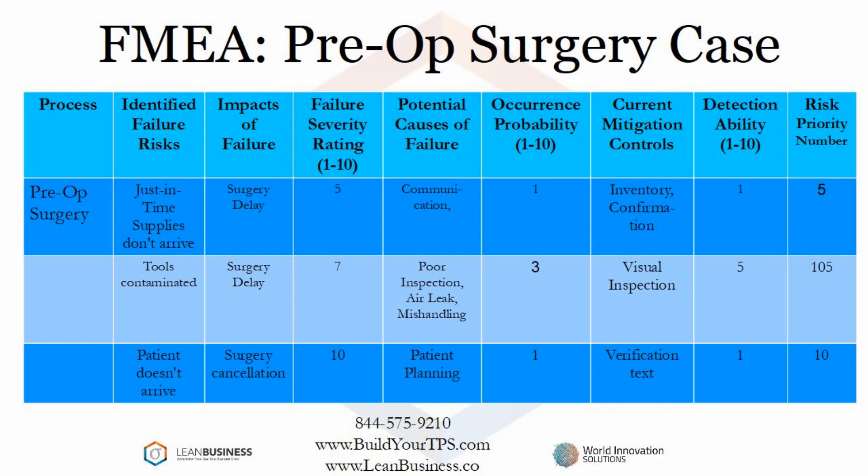The next step involves determining the probability of the failure occurring and assigning a value within 1 to 10. Failure risk is mitigated by controls. Just-in-time supplies could be mitigated by having a day's worth of supplies on site and confirmation of delivery. A control for contaminated tools could be visual inspection. Patients not arriving could be mitigated by using text to verify their arrival. The next step is to determine your ability to detect a failure. It is very easy to detect that supplies don't arrive and that the patient doesn't arrive. It may be much harder to detect contaminated tools, and the entered numbers are meant to represent that.